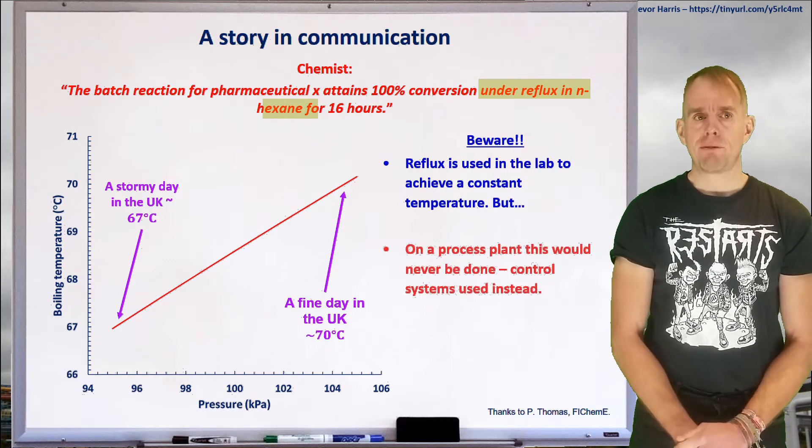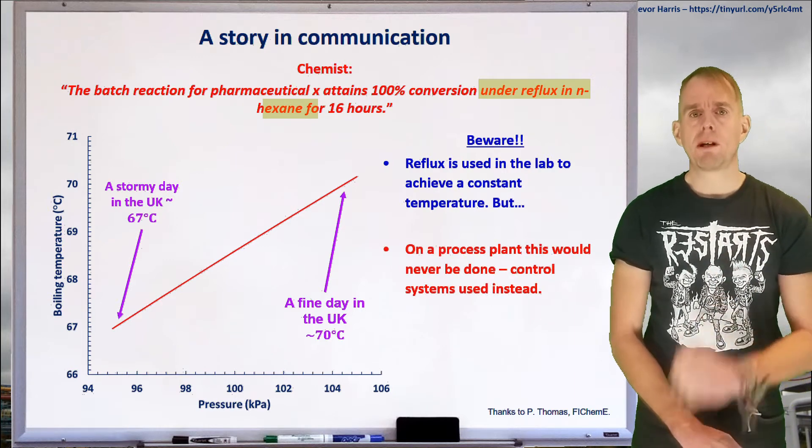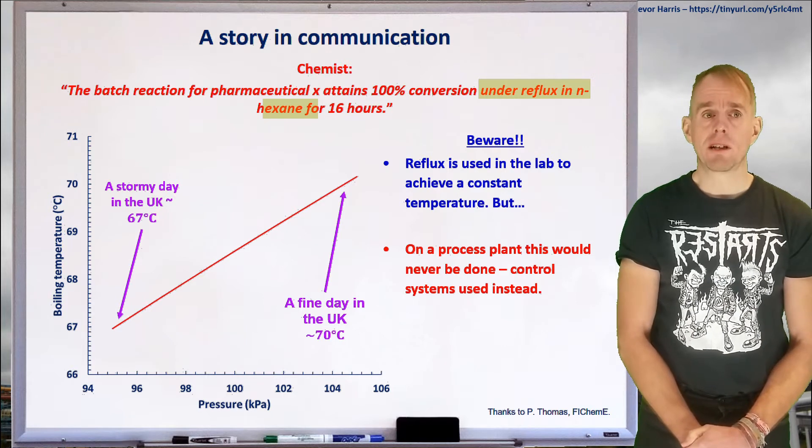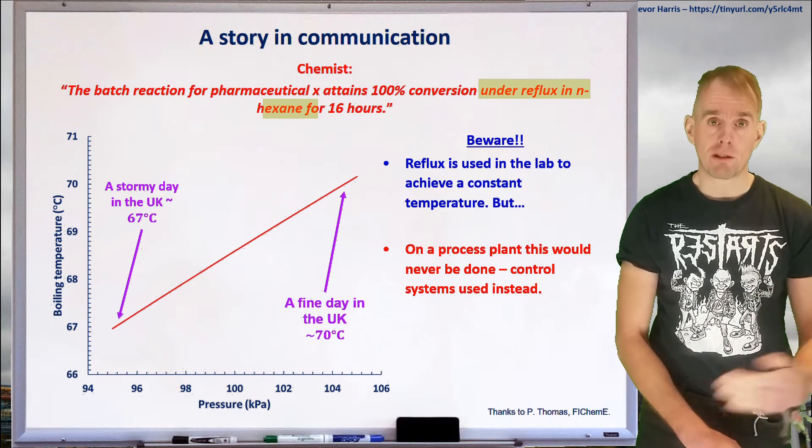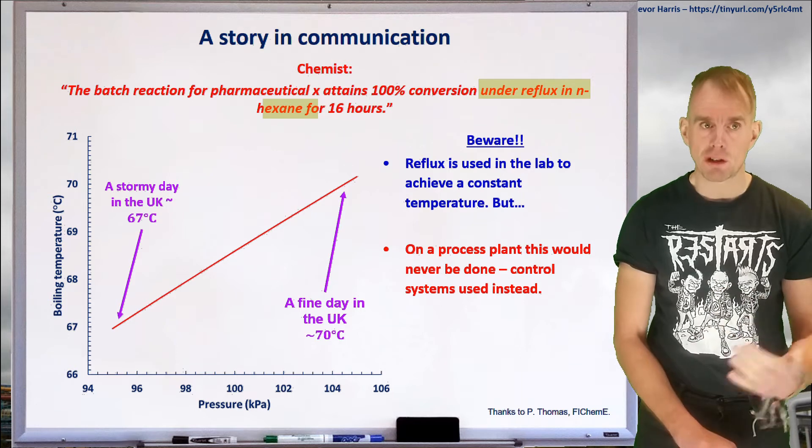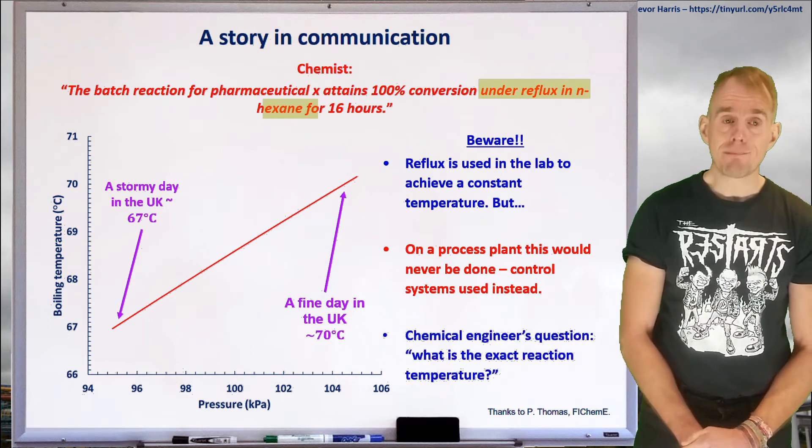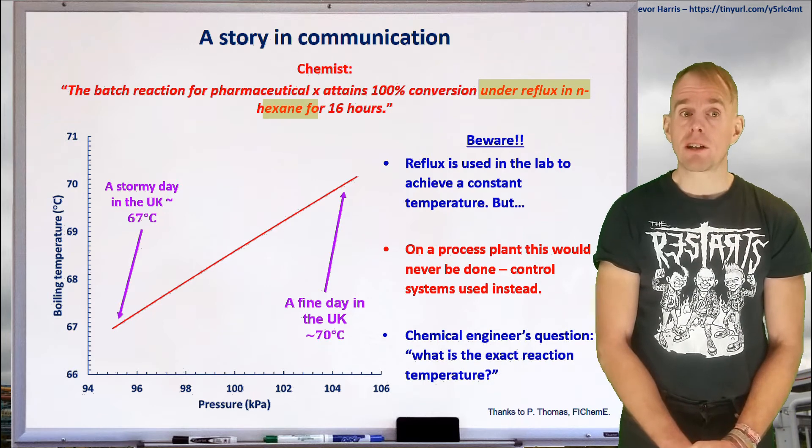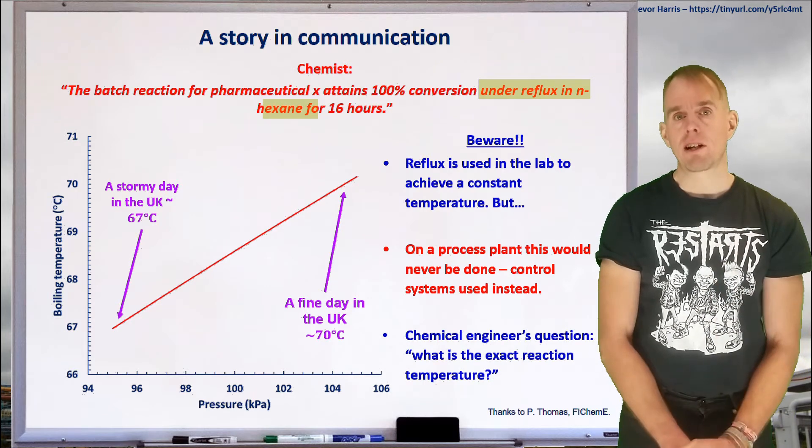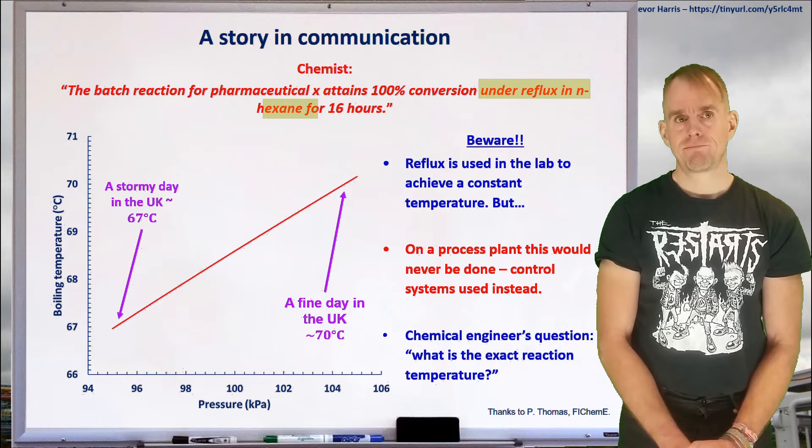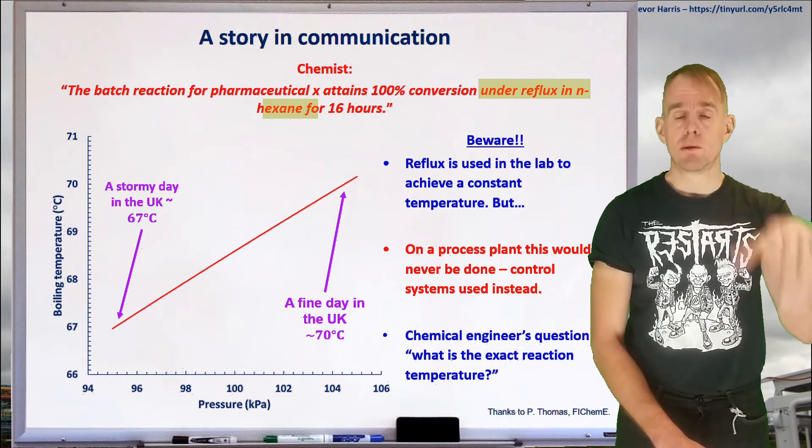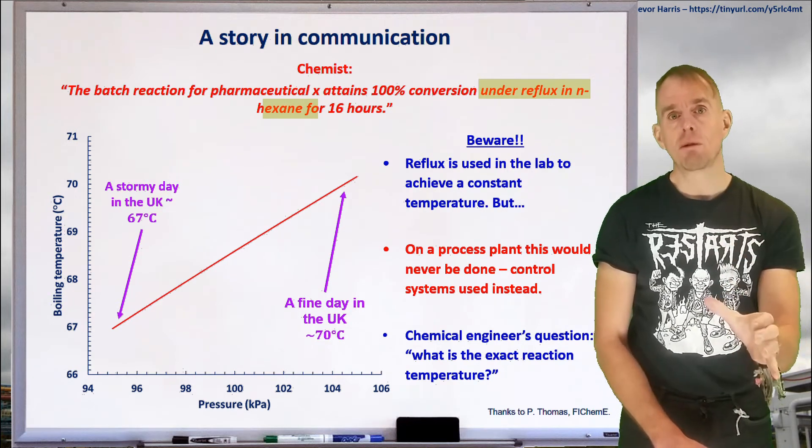And that means you've effectively got a 3 degree C difference in your boiling temperature for N-hexane. So we need to be very careful. So we know full well we wouldn't be achieving a constant temperature through a boiling solvent reflux on a plant. We've got temperature control systems, but what temperature is that control system set to? So the first question the chemical engineer should ask is, OK, what's the exact reaction temperature? So you take that statement, you interpret it, and you ask an intelligent question back.